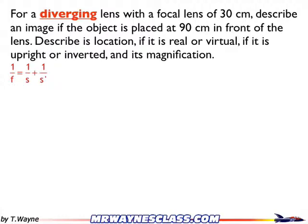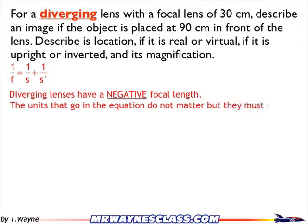A couple of important things: diverging lenses have a negative focal length, so I'm going to put a negative number in for the focus. The units in this equation don't matter as long as they match — you can use centimeters, inches, yards, or parsecs — and whatever units you put in, your answer will have those same units.